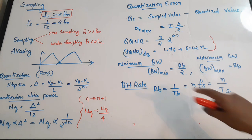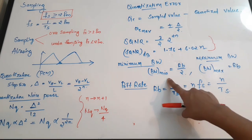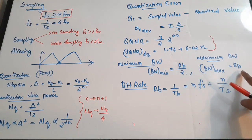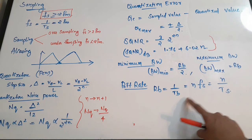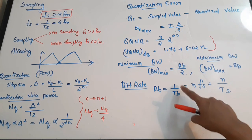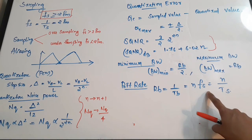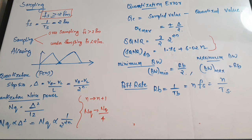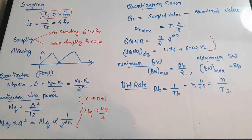For PCM, the minimum bandwidth is RB/2 and maximum bandwidth is RB, where RB is the bit rate. The bit rate RB = 1 / Tb, where Tb is the bit time period. RB = N × Fs, where N is the number of bits and Fs is the sampling frequency. This can also be written as N / Ts, where Ts is the sampling period.